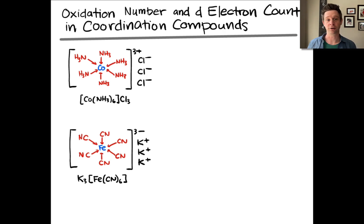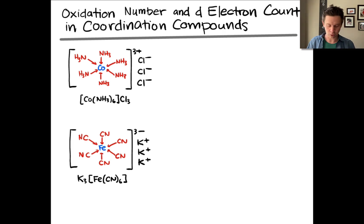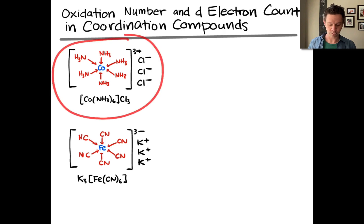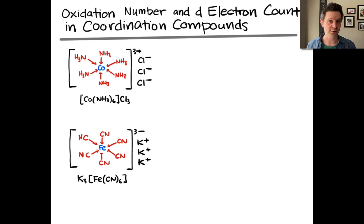To determine the oxidation number, we need the overall structure of the complex. So drawing the structure of the complex and the counter ions, if it's a coordination compound, is a prerequisite here, including the total charge — the total charge is really important. I've taken the two coordination compounds we've been looking at so far: this cobalt ammonia complex with a charge of 3 plus, and this iron cyanide complex with a charge of negative 3, and redrawn those structures with their formulas and included the counter ions as well.